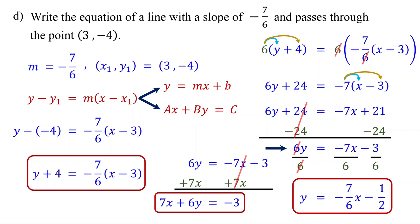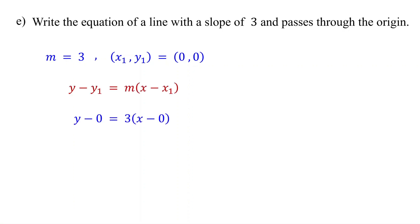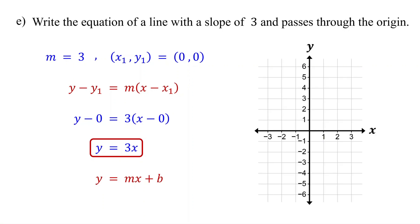What if the line passes through the origin? The origin is the point (0, 0). Replace y1 with 0, m with 3, and x1 with 0. This simplifies to y equals 3x. The equation is in slope-intercept form. Since there is no constant term, the y-intercept is 0. Remember, the y-intercept occurs when x is 0. If you graph this, you will see that the line passes through the origin.